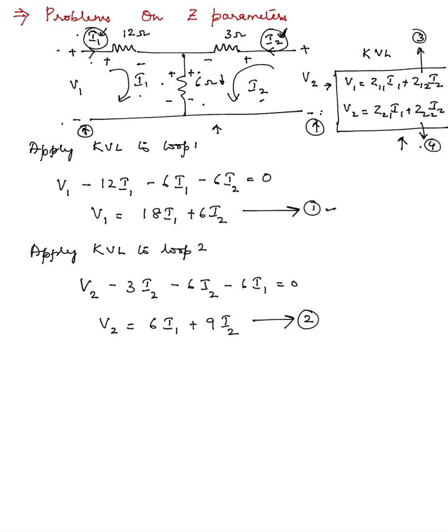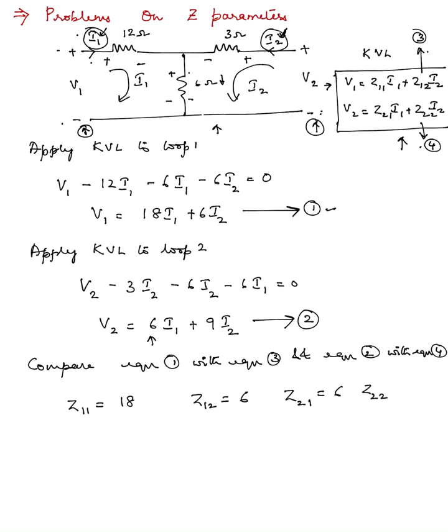If I mention this as equation number 2, and if you check out the governing equations as well as equation number 1 and 2, you will feel that they have the same representation. We can compare equation number 1 with equation 3 and equation 2 with equation 4. You get Z11 as 18, Z12 as 6, Z21 as 6, and Z22 as 9.